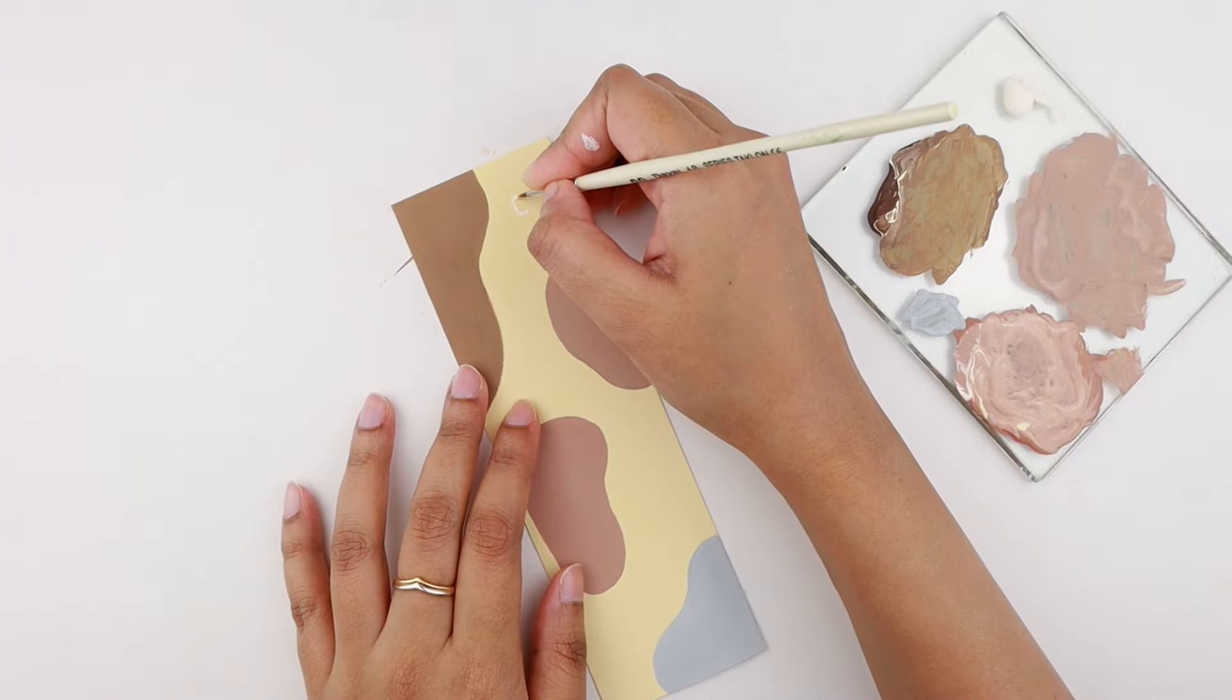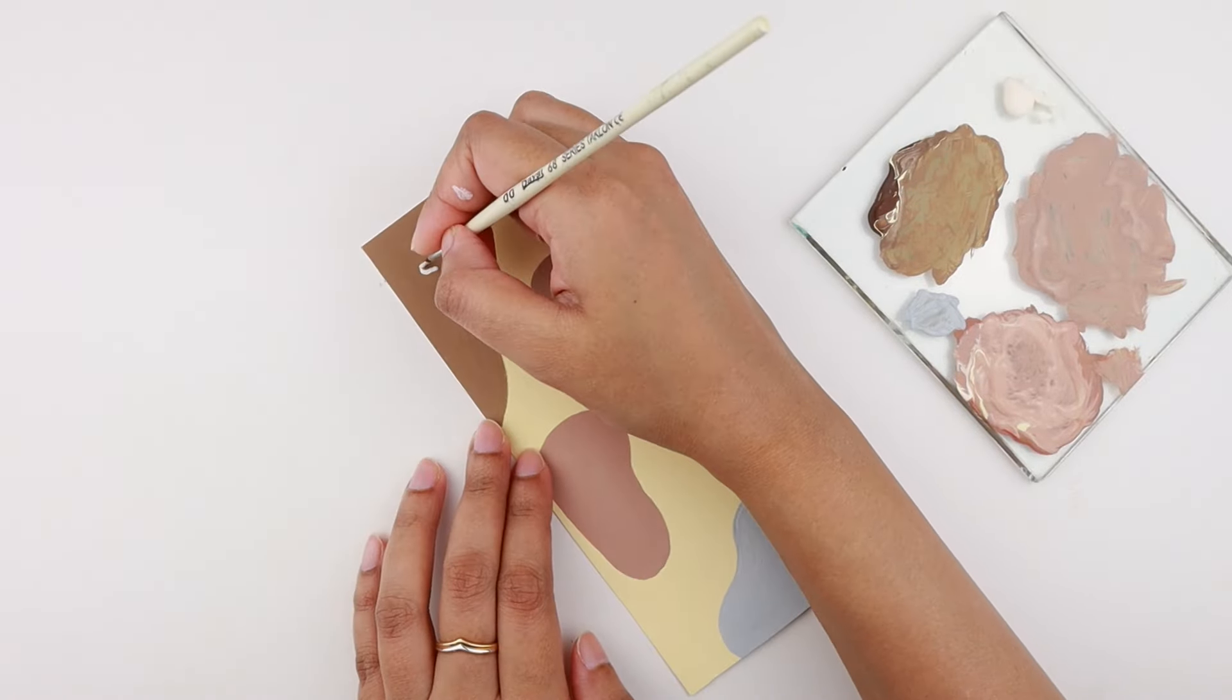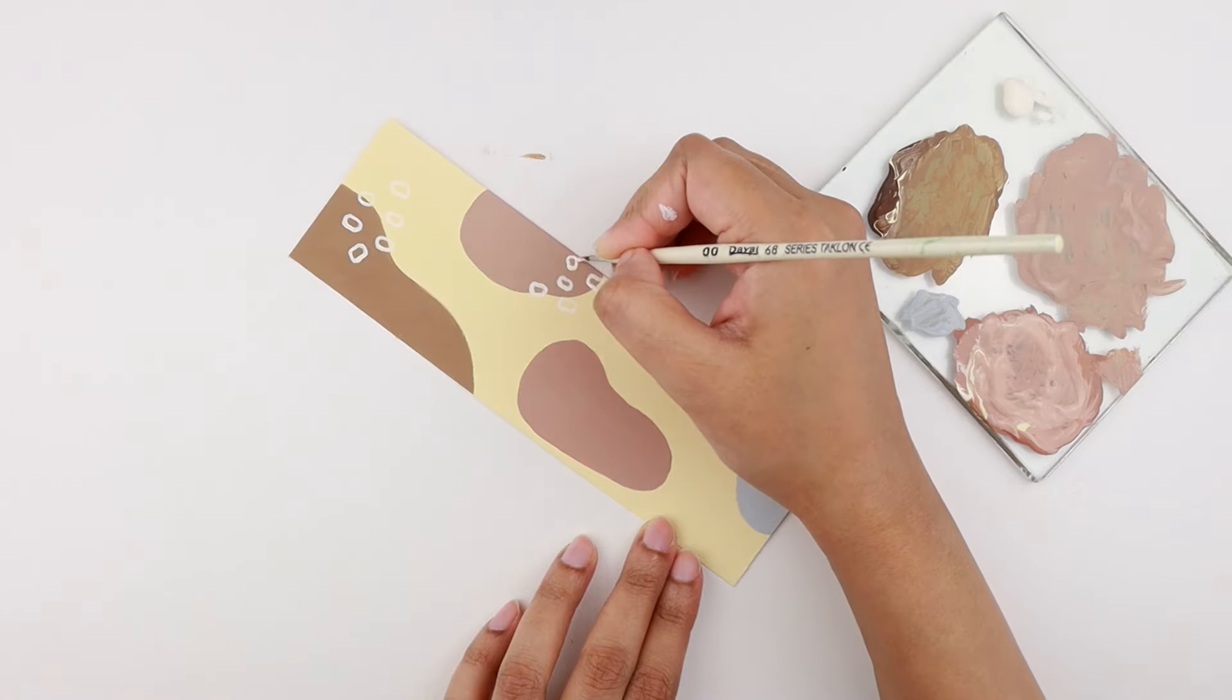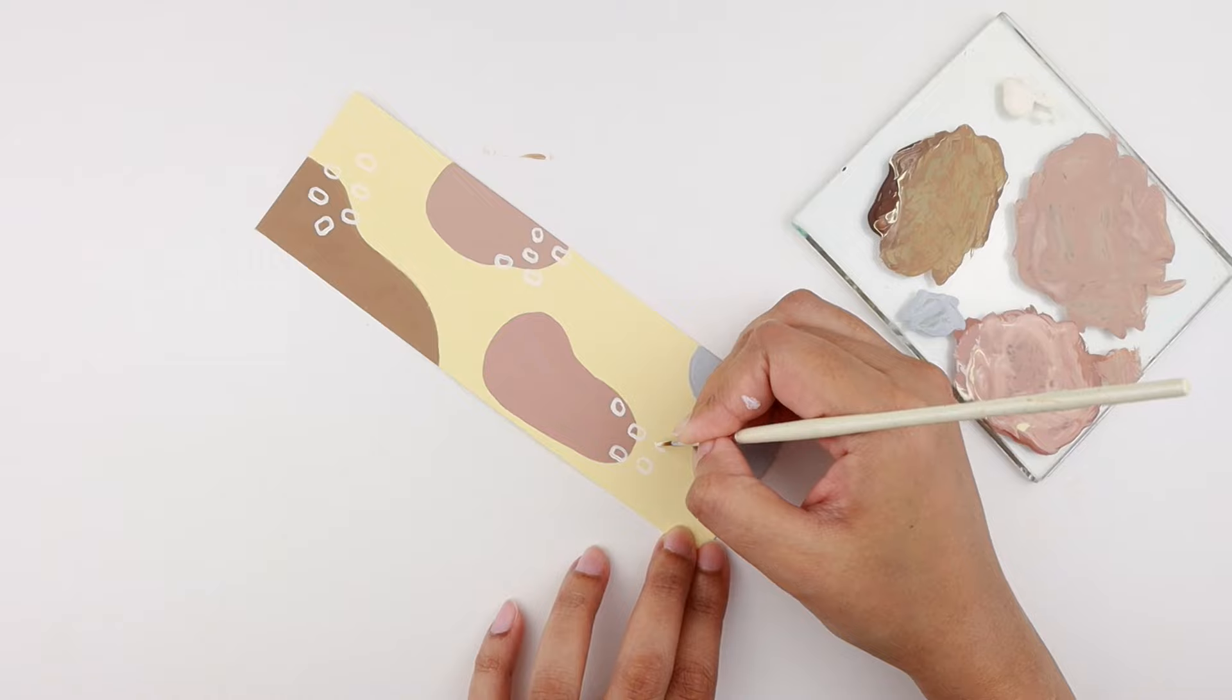Using white acrylic paint, I'm painting a set of tiny oval shapes like this. I'm painting the pattern in such a way that half of it lies on the blob and the rest half of it lies on the background.